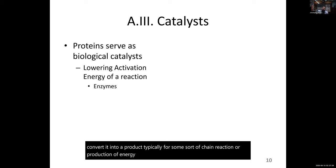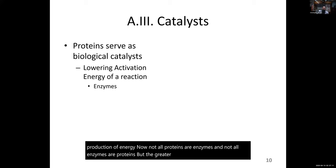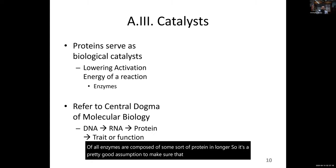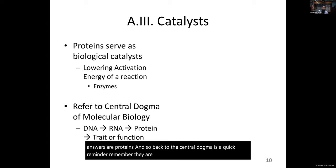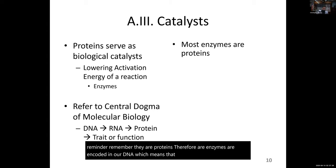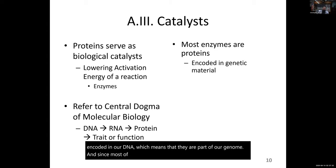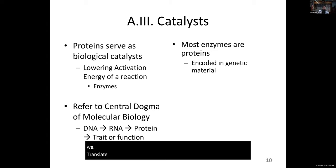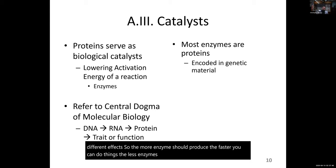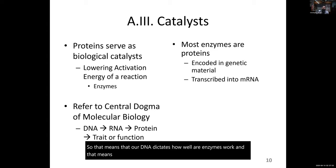Not all proteins are enzymes and not all enzymes are proteins, but about 99% of all enzymes are composed of some sort of protein. Back to the central dogma: our proteins, therefore our enzymes, are encoded in our DNA, which means they're part of our genome. Depending on how we transcribe and translate and produce these proteins, we'll get different effects. The more enzymes you produce, the faster you can do things. So our DNA dictates how well our enzymes work, and that means our DNA dictates how well our metabolism works.